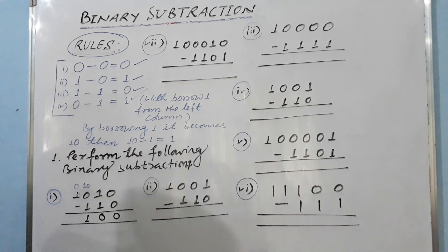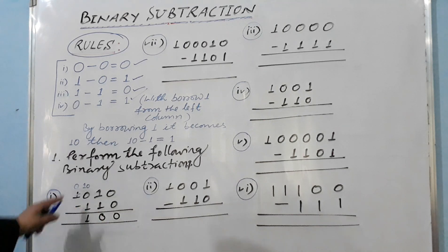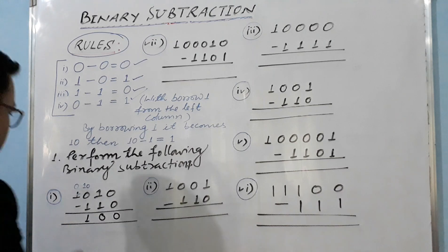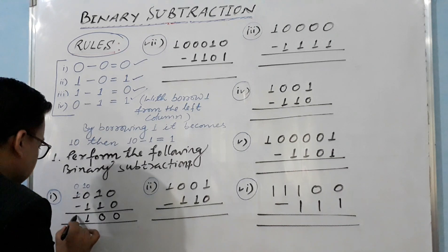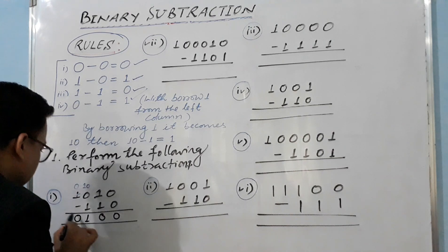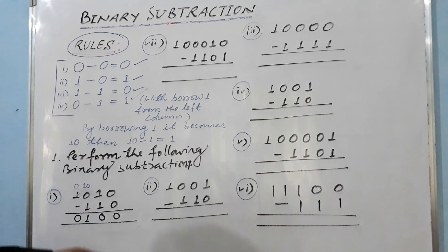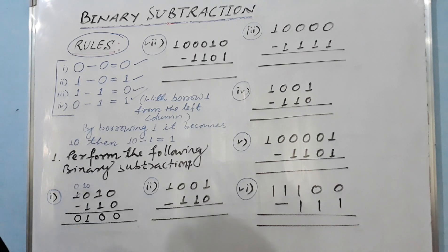Clear everybody? Here we get zero. So the answer is simply 1000 or 0100 — now clear. Let's move into the next question.